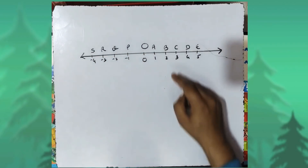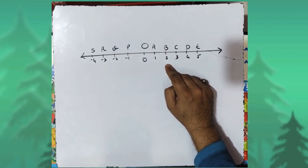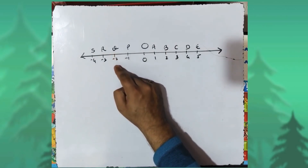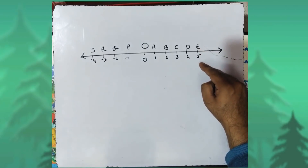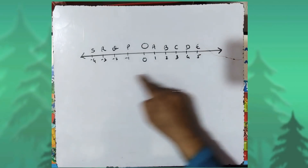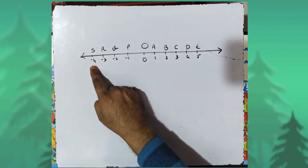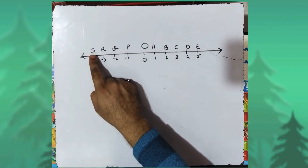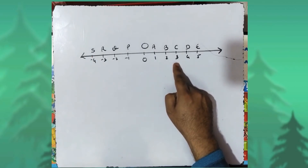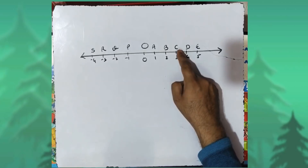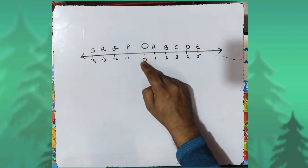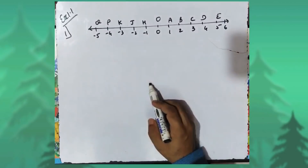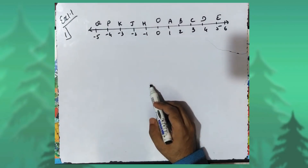The coordinate of point B is two. The coordinate of point Q is minus two. The coordinate of point E is five. Minus four is the coordinate of point S. Three is the coordinate of point C. Origin O has the coordinate zero. Now, Exercise 1.1, first question: find the distance with the help of the number line given.